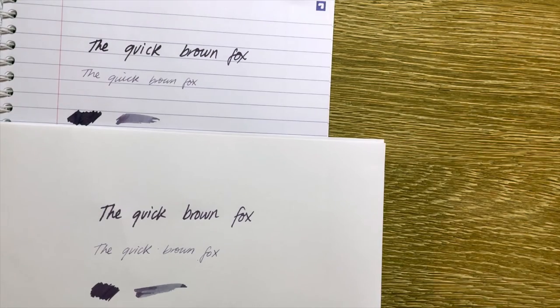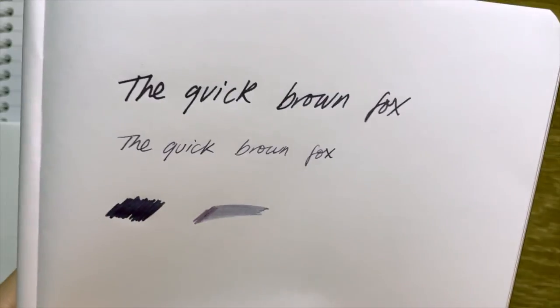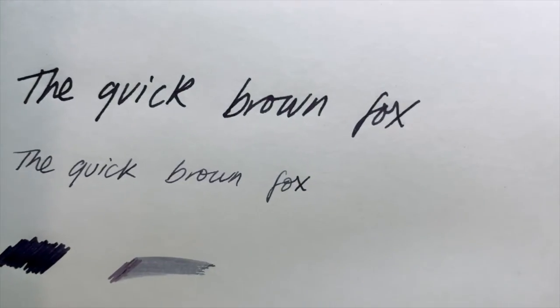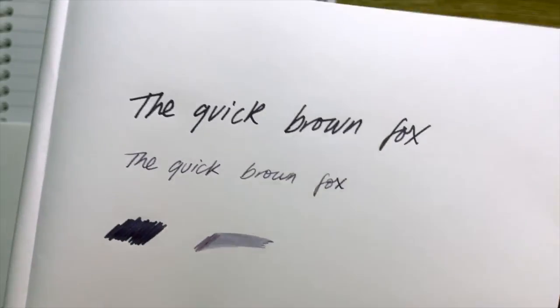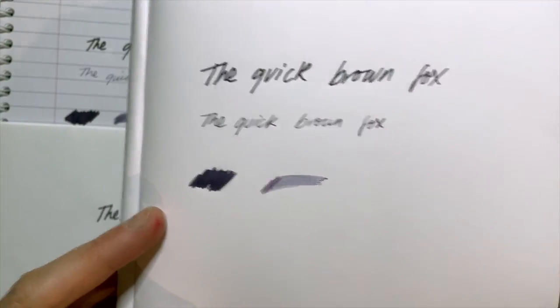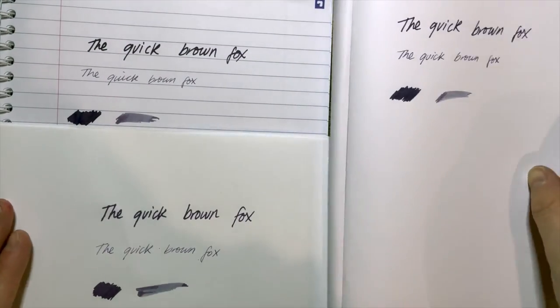Next up after that is the Clairefontaine 90 gsm. This is the blank white. It looks really great, no feathering, the ink looks good. Bit of ghosting, and that swatch has just kind of warped the page a little bit, but not bled through. So another really really great option.